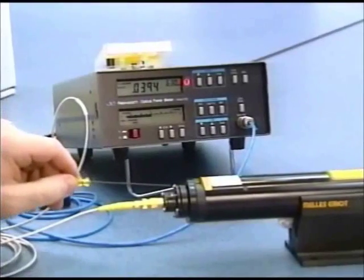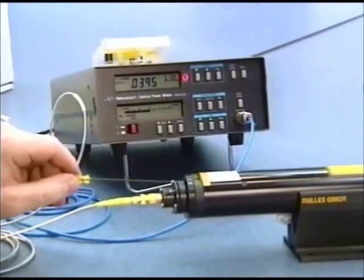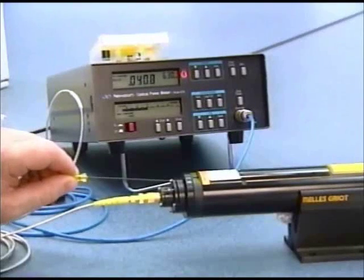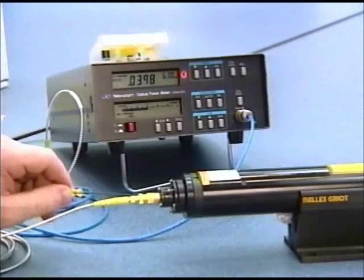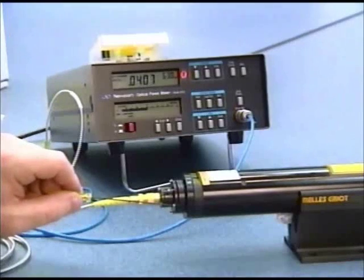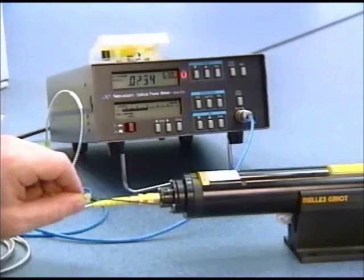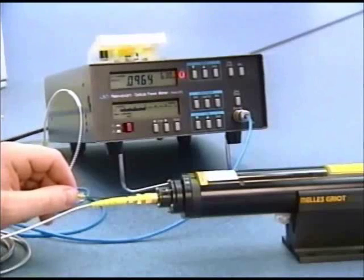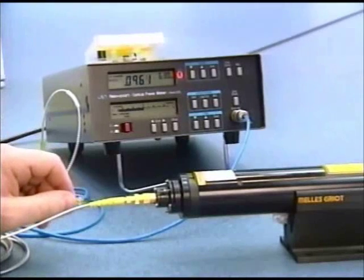So we're adjusting the tilt and we're trying to get the best coupling efficiency. Now initially, we might be significantly out of focus, so we might not get very good coupling efficiency to start with. As I adjust it here, I'm finding that I'm getting somewhere around about 9 to 10 percent.